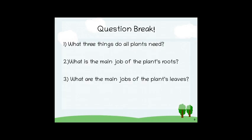Question break. What three things do all plants need? Write the answers down in your notebook. What is the main job of the plant's roots? What are the main jobs of the plant's leaves? For number one, if you guessed water, air, and light — correct, good job. For number two, if you guessed to absorb water and minerals from the soil, you guessed right. And for number three, if you wrote down to absorb sunlight and to expel waste, that's also right. Good job.